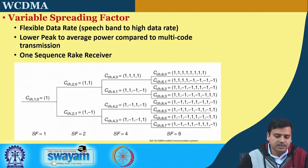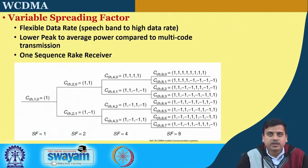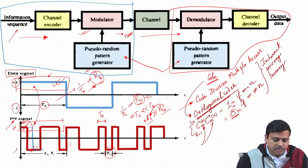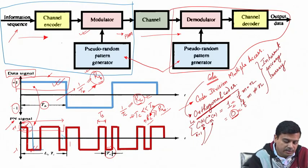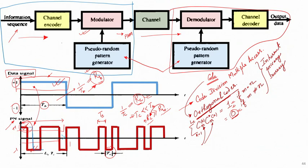Going beyond what we have discussed, there is also a method for allowing a variable spreading factor. When we say variable spreading factor, we mean the number of chips available during a bit period can be modified — in other words, the code length can be varied. Instead of having a fixed code length where the ratio Rc/Rb is constant, we can have a variable factor, meaning the code rate is not constant but can vary.